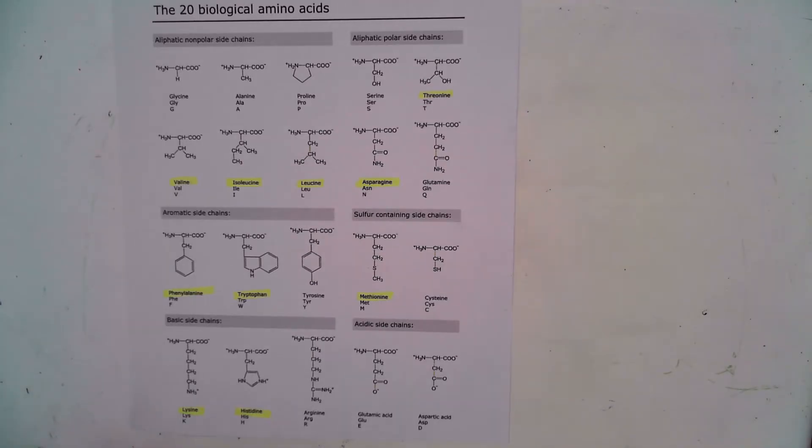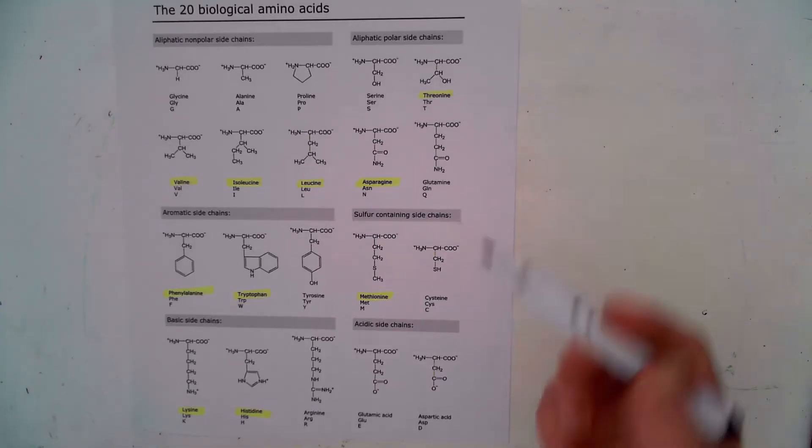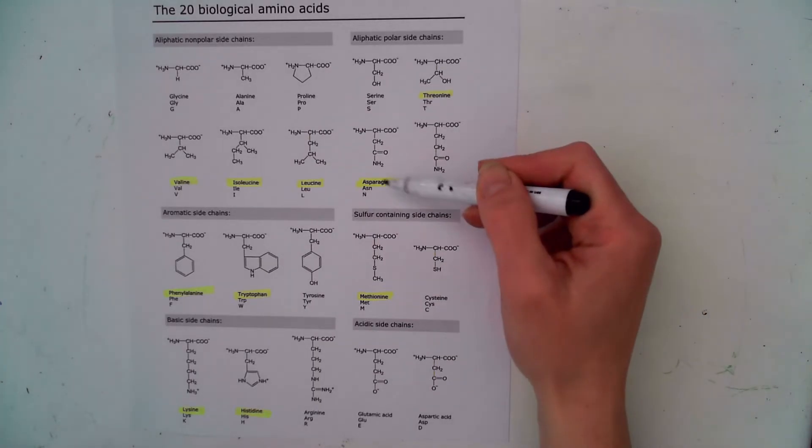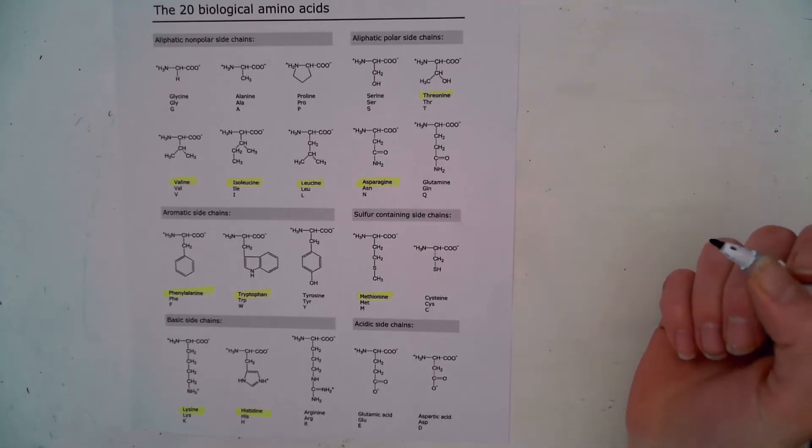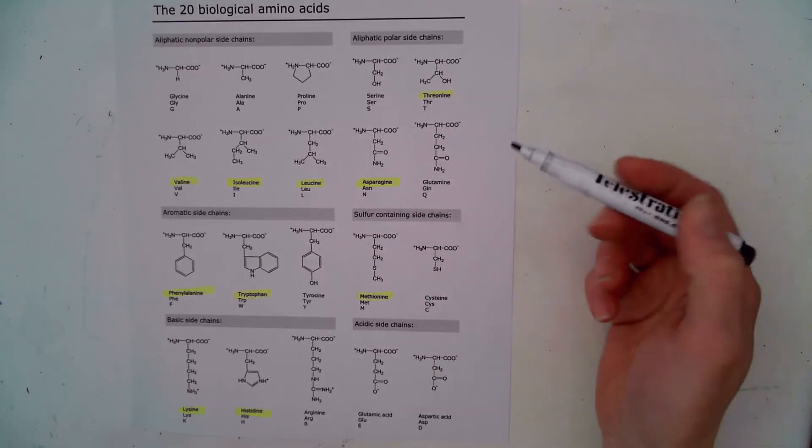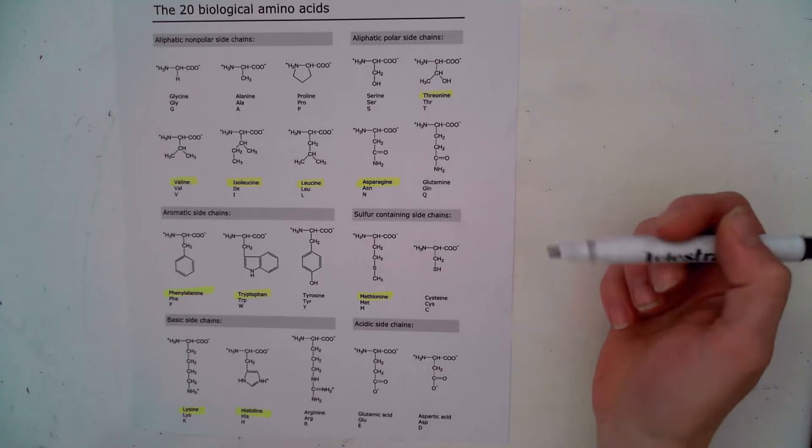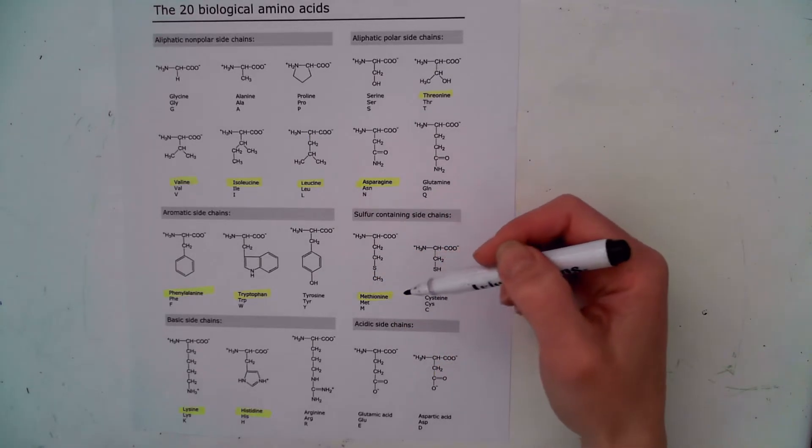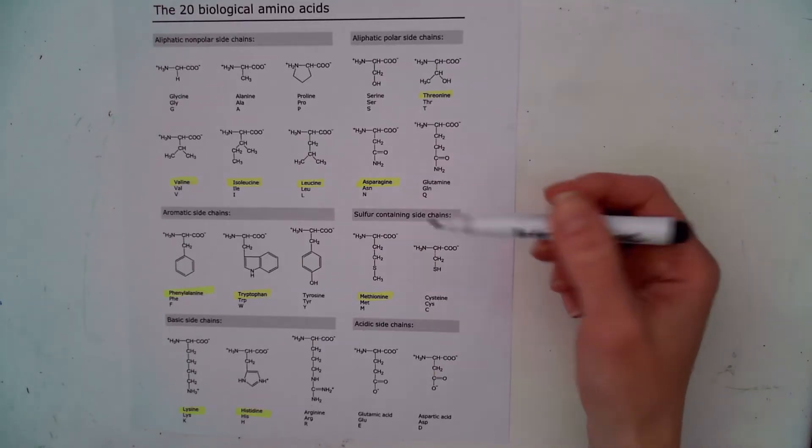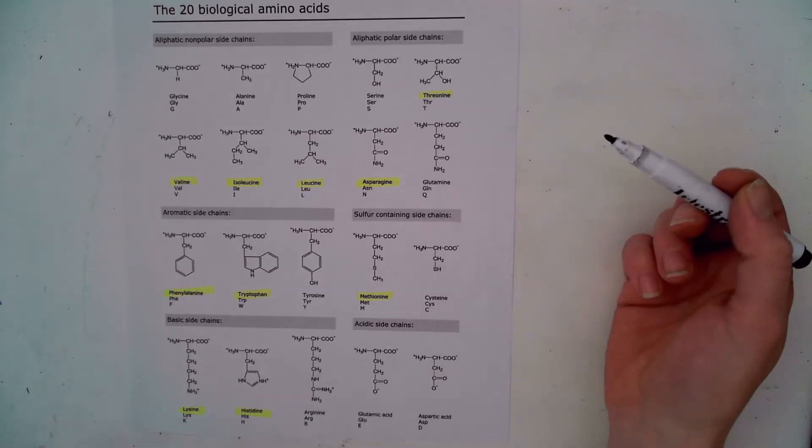So where does our body get the amino acids that it needs to build proteins? Well a lot of them have to come from our diet. These amino acids that I have highlighted in yellow are considered essential amino acids. And you may have heard that on commercials or seen that on the side of a vitamin jar. And what that means is that these are amino acids that can only come from the food you eat. Foods that contain protein would have their own amino acid chains that your body is going to break apart and use those individual amino acids to make new proteins within your body.